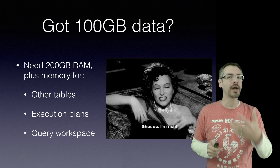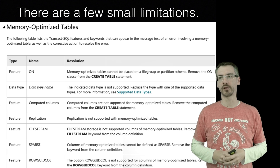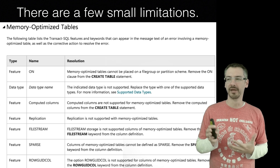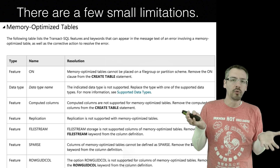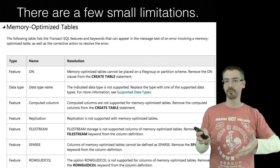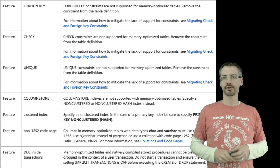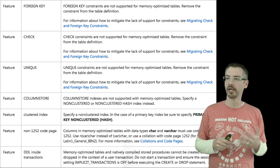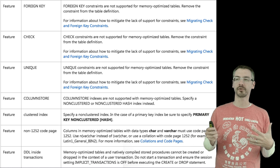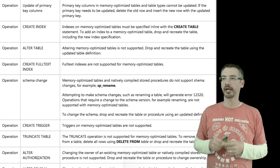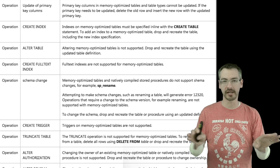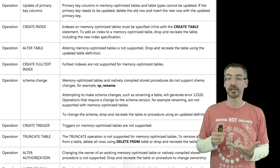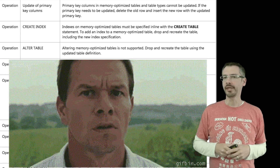As long as you can handle that, you can move forward — but you need to keep in mind a few limitations. Computed columns are not available, replication, filestream — these are kind of niche features. Can't have foreign keys, checks, unique constraints. No columnstore. Can't have a separate clustered index. No DDL inside transactions. Can't update primary key columns — whatever your primary keys are when data is inserted, you can never change that. You can't create an index. You can't alter a table.